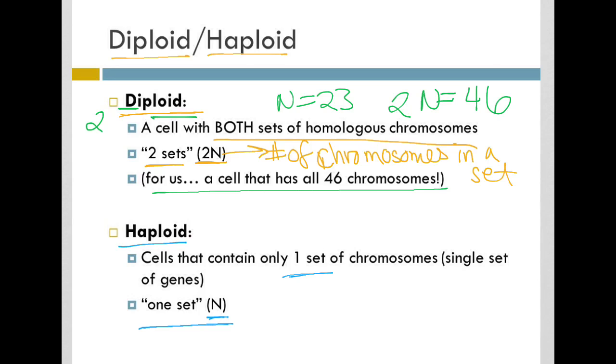So our n number, as mentioned before, is 23. That's the number of different chromosomes in a set.